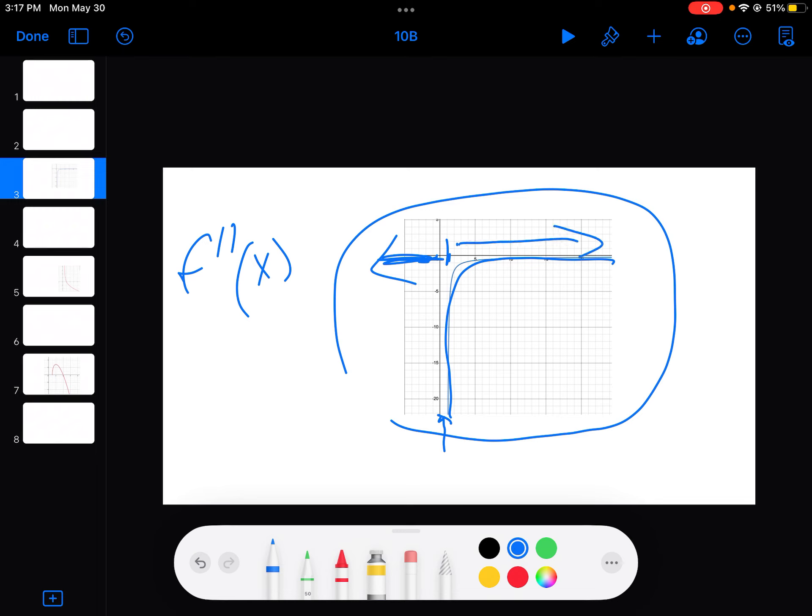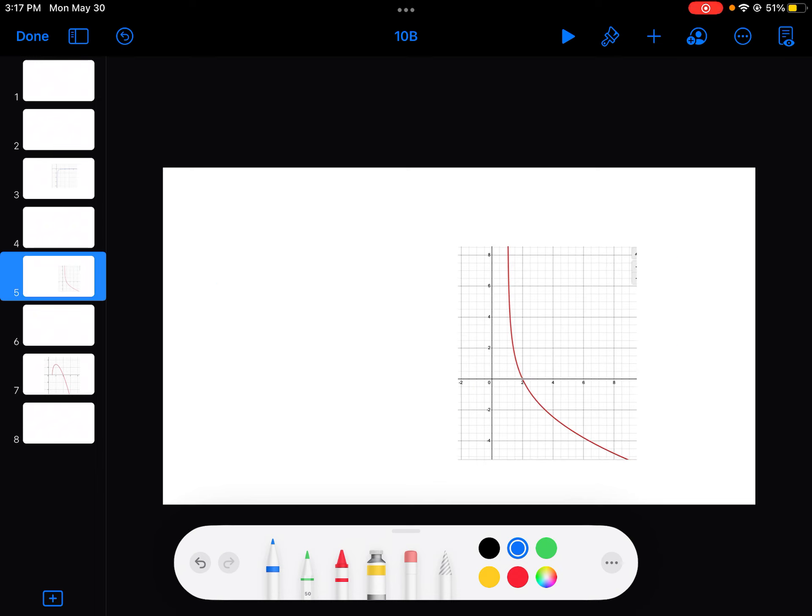So everything we might expect, it's always negative. And what that means is, this is F prime. Because F double prime is always negative, it means the slope of F prime is always negative.